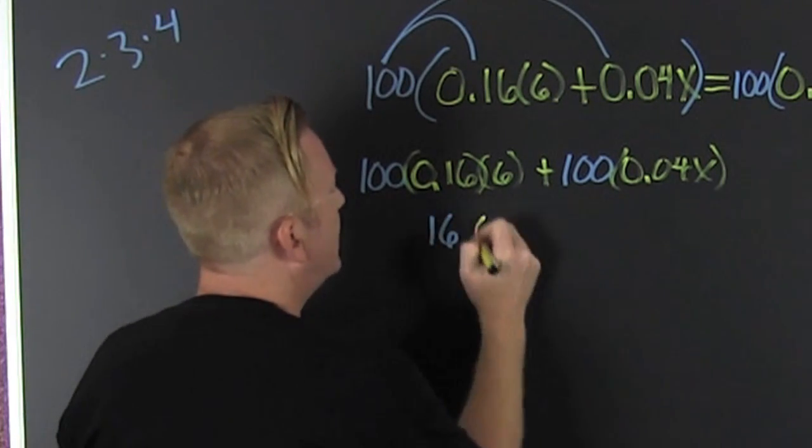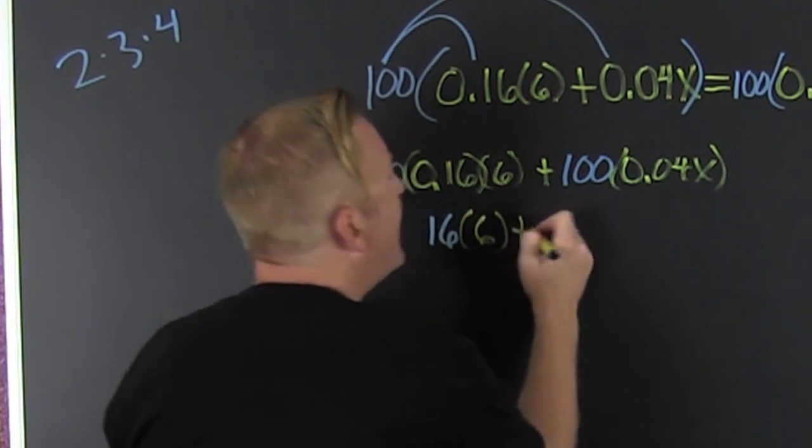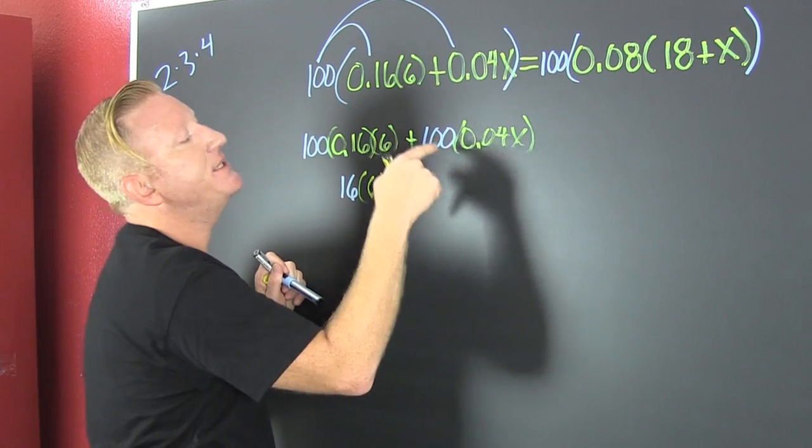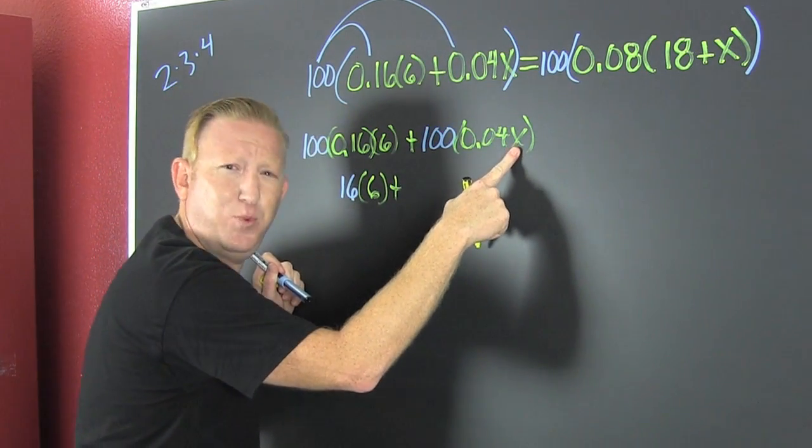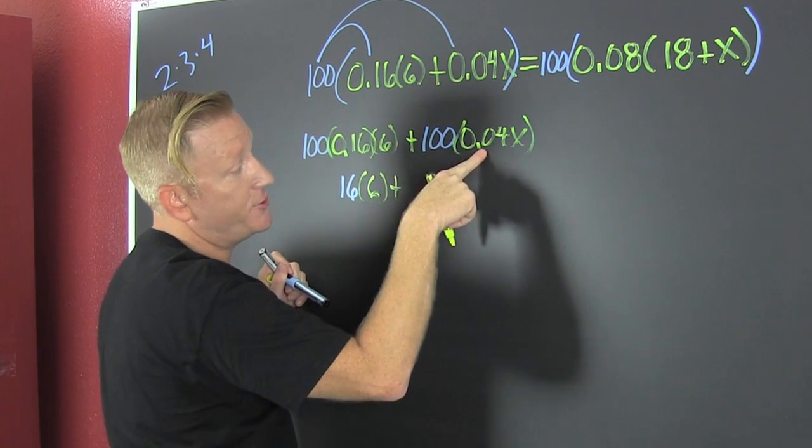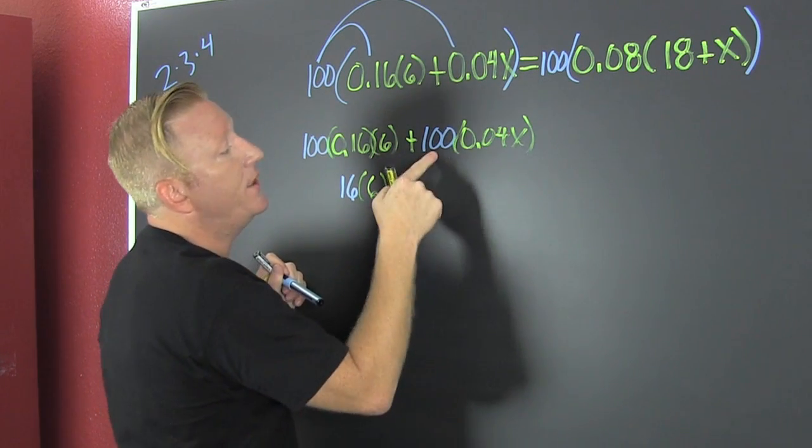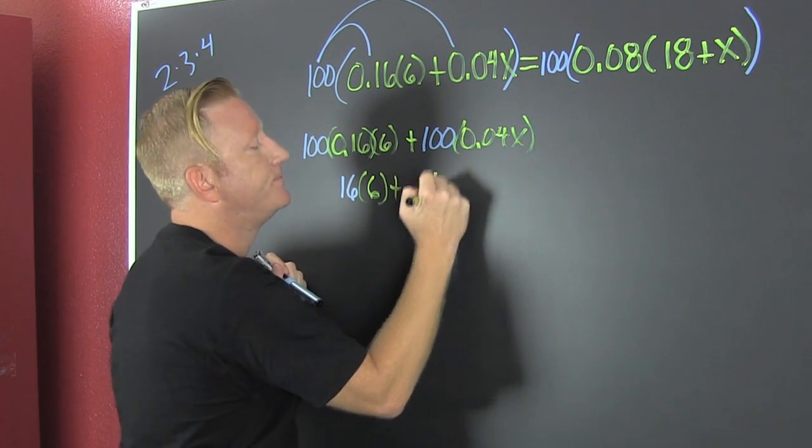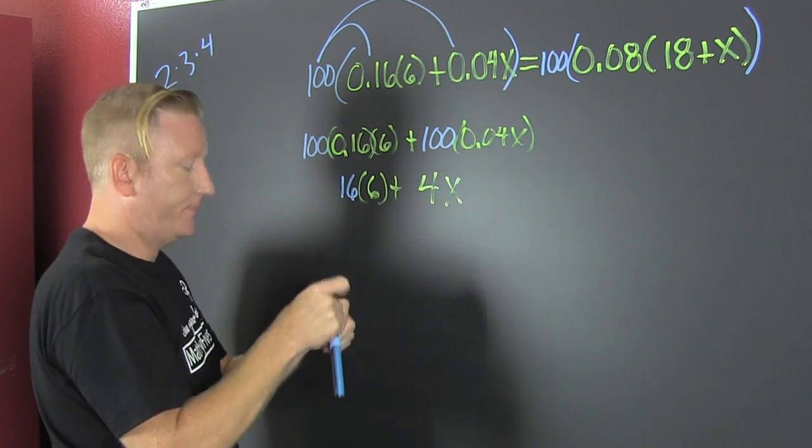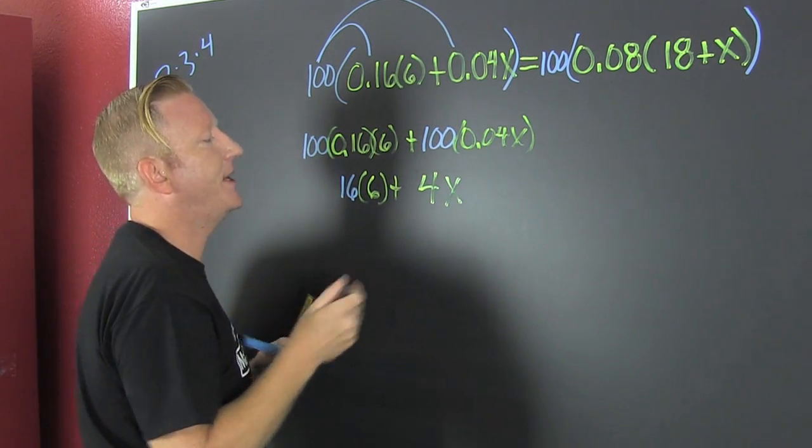Times that 6, bam. And then I'm going to add it to, same deal here. It's not the 100 times that and the 100 times that. No, it's just 100 times that. So then 100 times 0.04 is 4x.